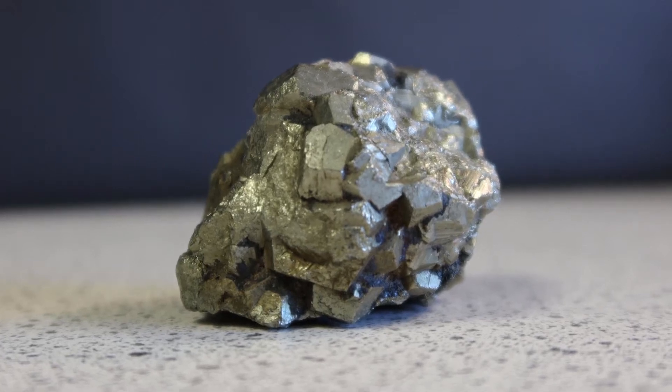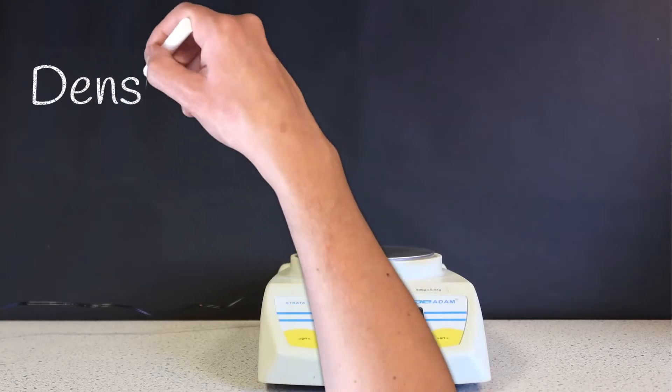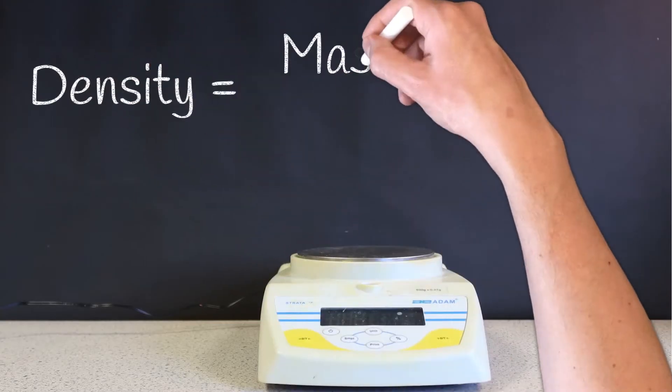Today we're looking at how to measure the density of an irregular shaped object like this. To work out the density we need to know both the mass and the volume.